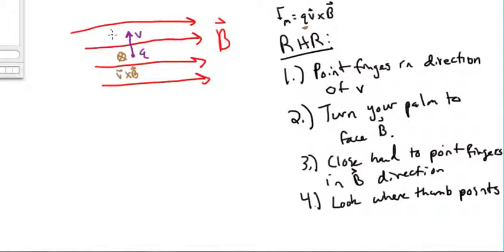So this will be the direction if it's positive Q. If this is positive Q, then the direction of the magnetic force, the Lorentz force, will be into the screen. And if it is minus Q, then it will be out of the screen coming right at you.